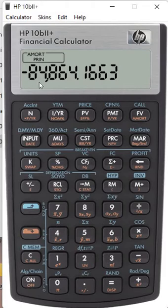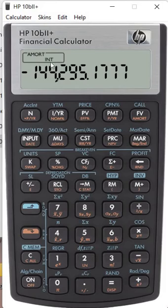So principal reduction, $84,000 display. Interest payment after 10 years is accumulated $144,000.